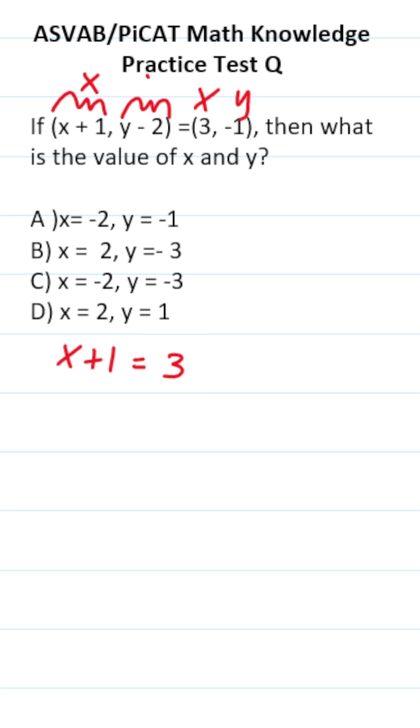We're going to take this y value in our ordered pair and set it equal to negative 1. So this is going to be y - 2 = -1, and by solving that, we'll know what our y value is.